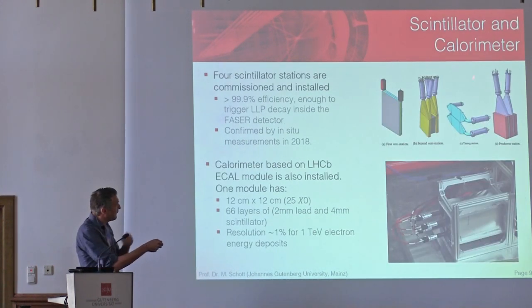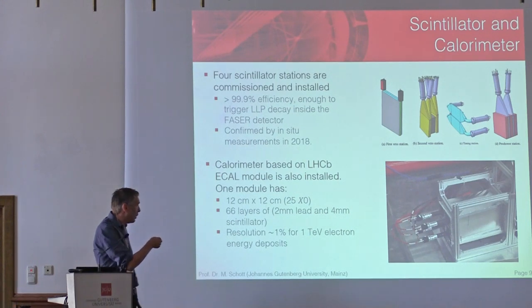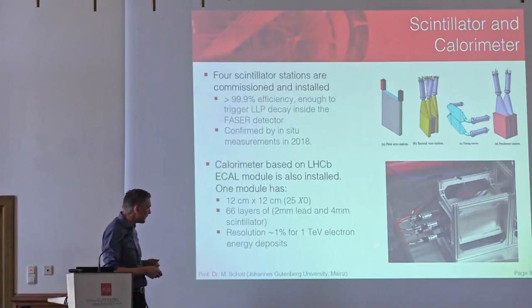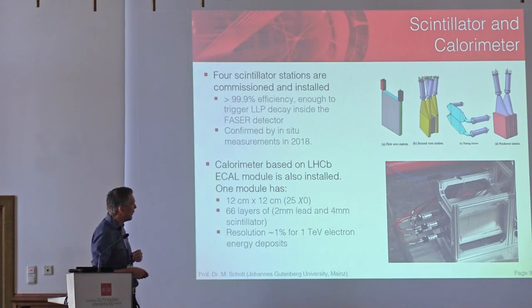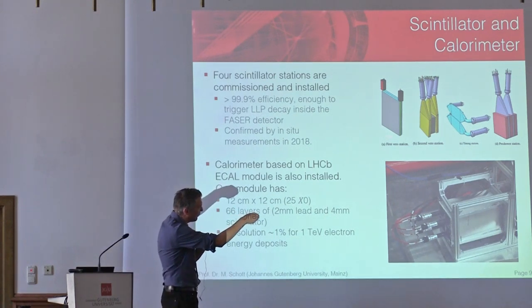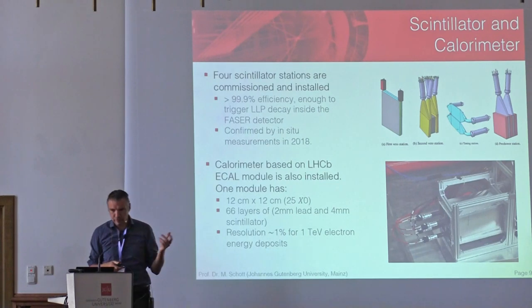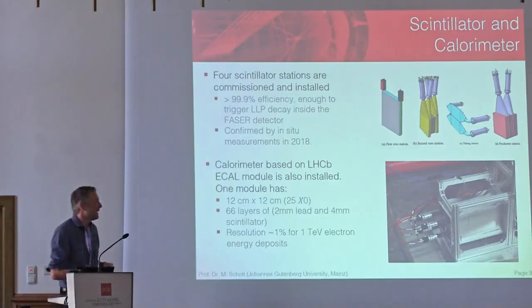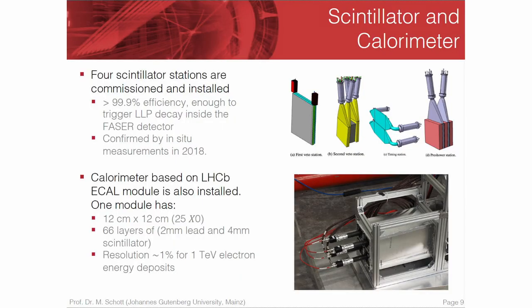The same thing is true for the calorimeter system. We use old LHCb modules — rather small, only 12 by 12 centimeters each — and these were already completely known from LHCb experts, so we could just reuse them. They have an energy resolution of roughly 1%, which is really extremely good. For the scintillators we had to develop our own — four different versions. It's not super tricky to build new scintillators; this is something a master's student can do. So this was our own development and it was rather straightforward.